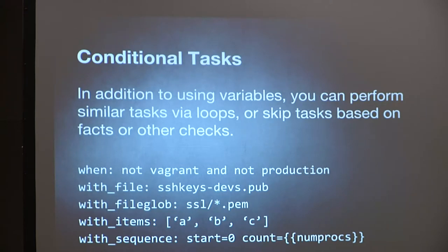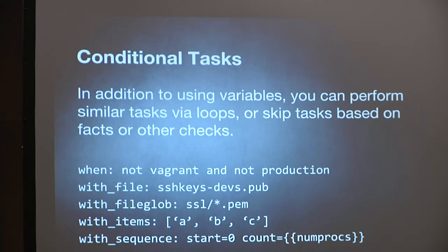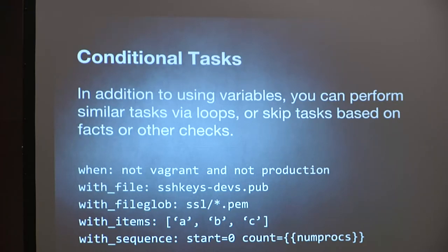A 'when' clause lets you run a task only when a condition is met — for example, only when it's not vagrant and not production (i.e., my test environment). 'with_file' runs a task for every line in a file — I have a file of all developer SSH keys so when test servers are deployed, all devs get SSH access. 'with_fileglob' processes every file in a directory. 'with_items' lets you list items explicitly. 'sequence' gives you a counting for-loop.